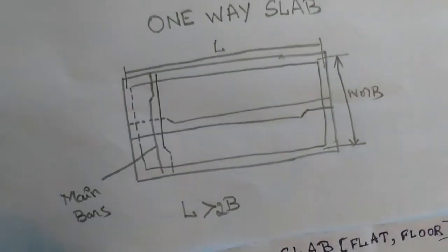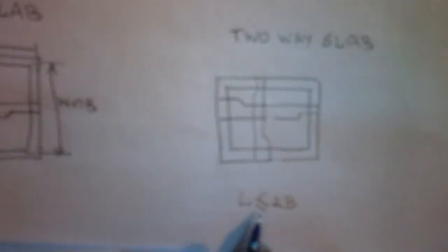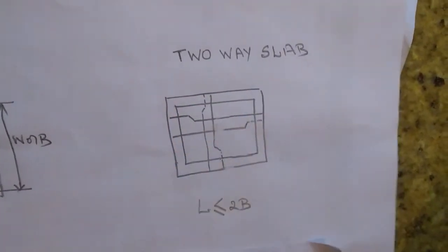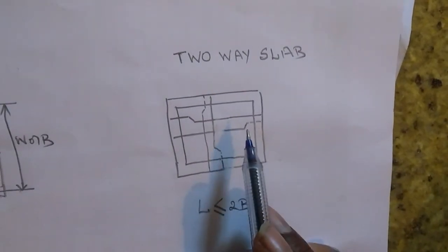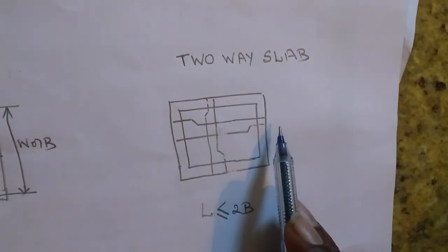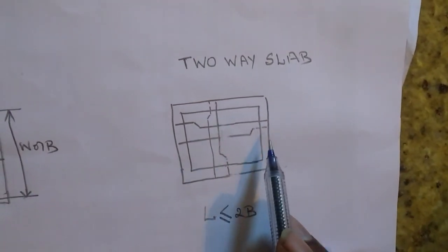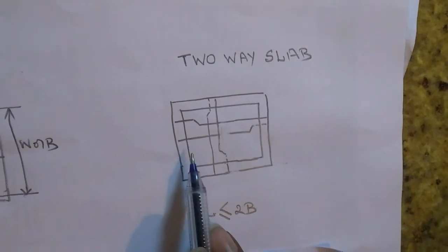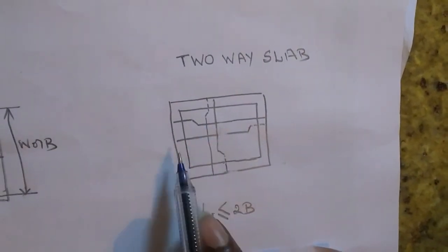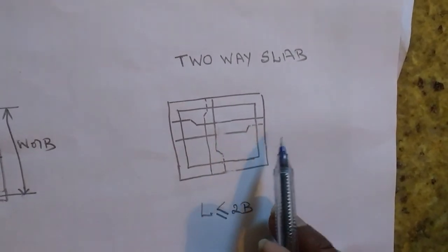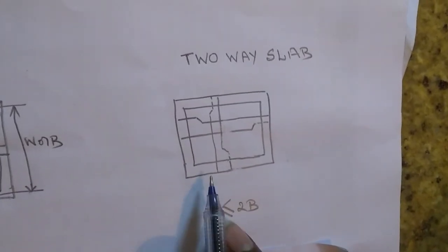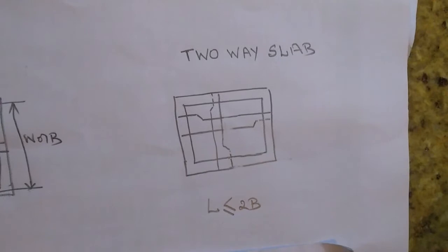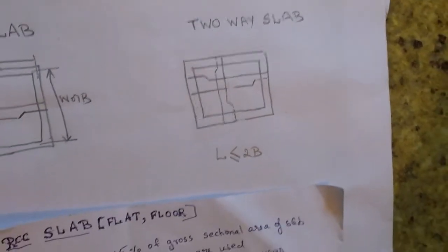For a two-way slab, the length is lesser than two times the breadth. The bars in both directions are considered as main bars. Generally, the bars in the shorter span are placed at the bottom and bars in the longer span are placed above. If both dimensions are the same, one is placed at the bottom and the other at the top.